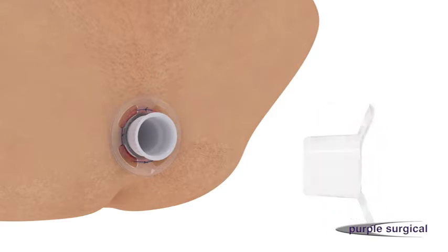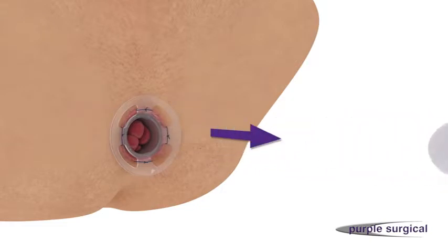Remove the anal dilator obturator to allow the prolapsed mucosa to fall into the lumen of the clear anal dilator and for direct visualization of the dentate line.